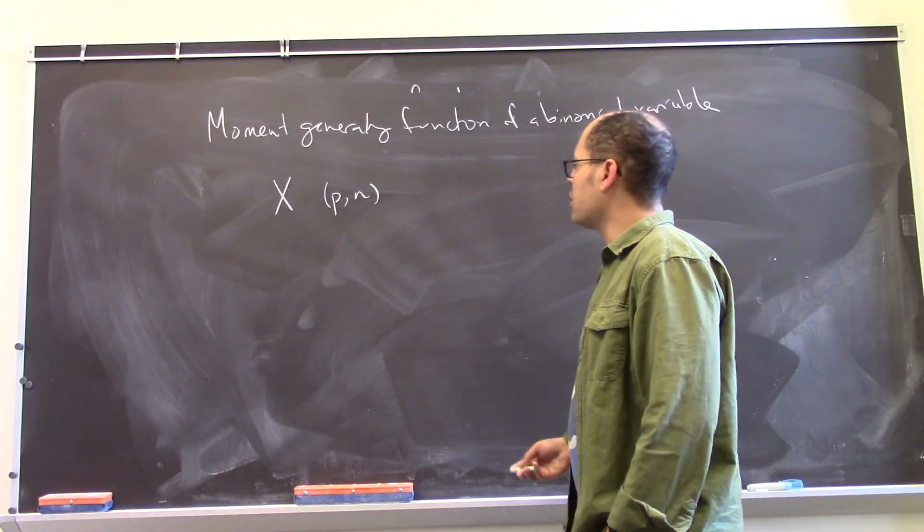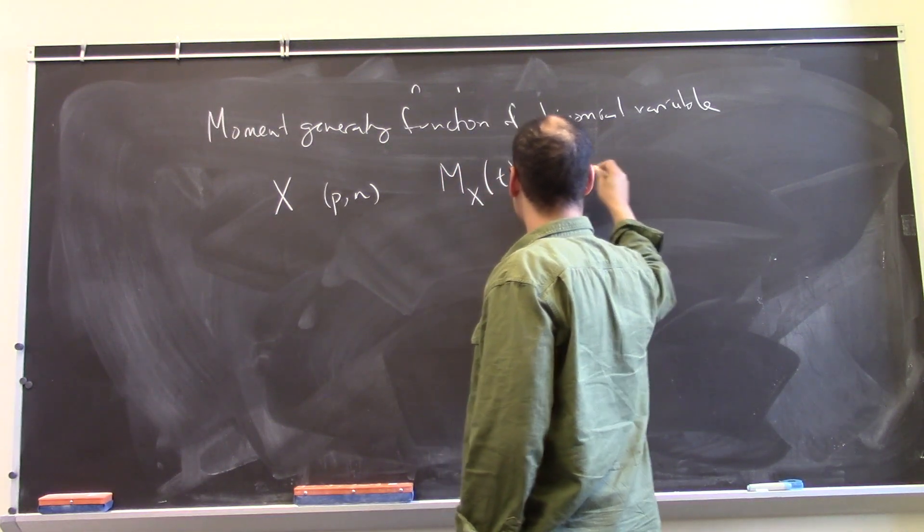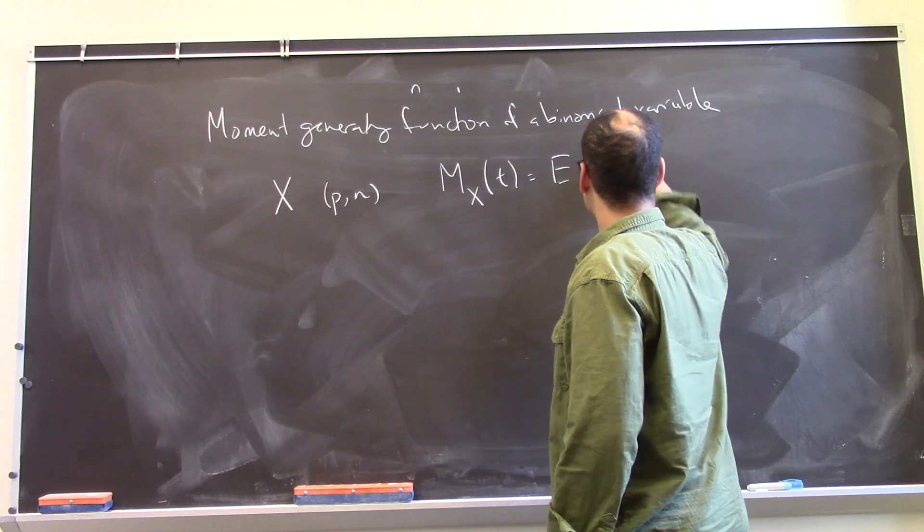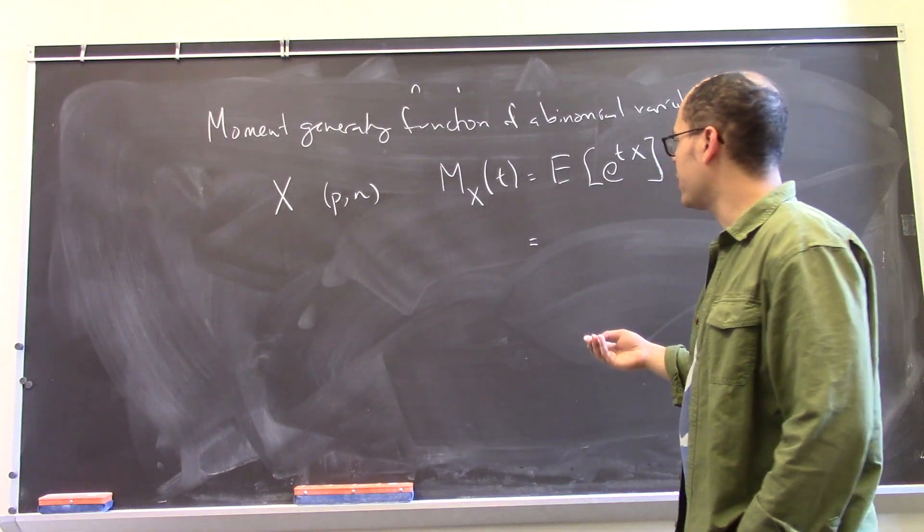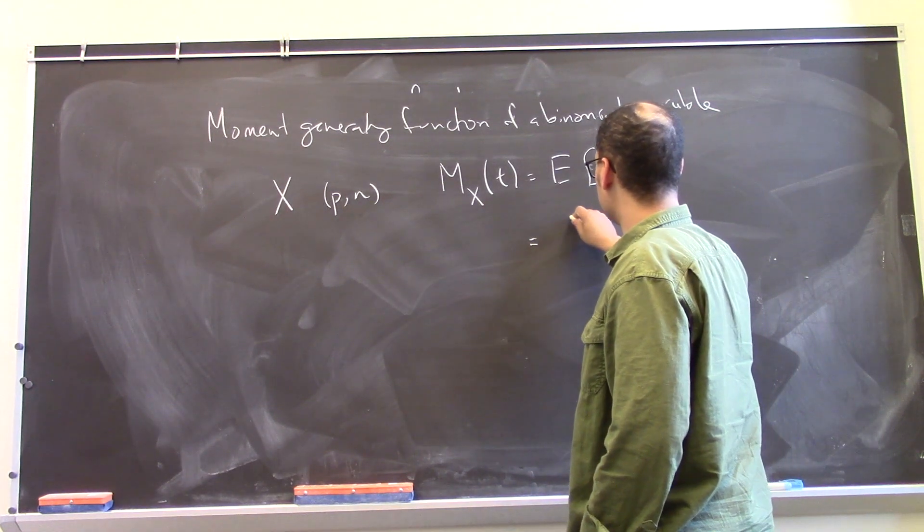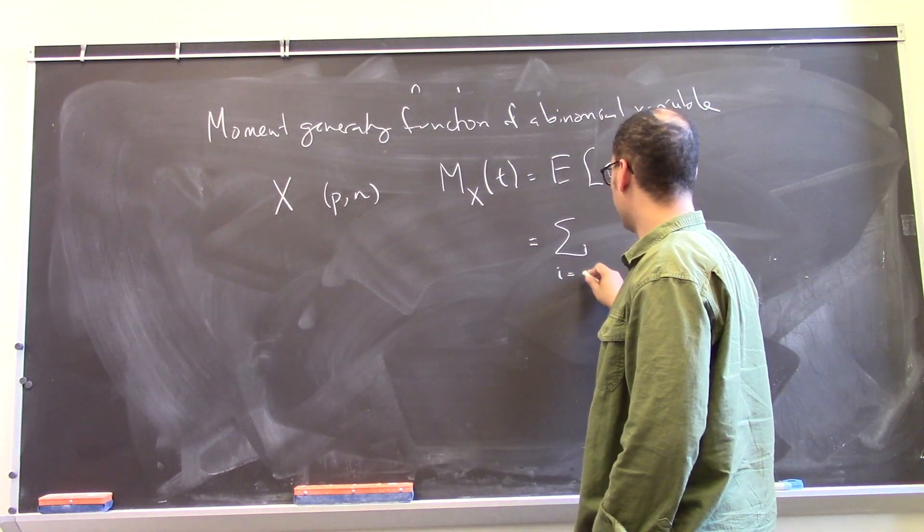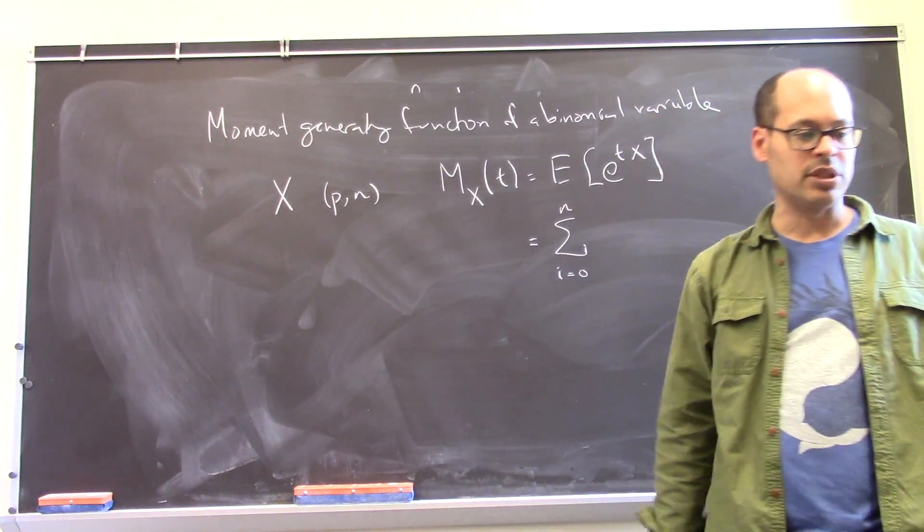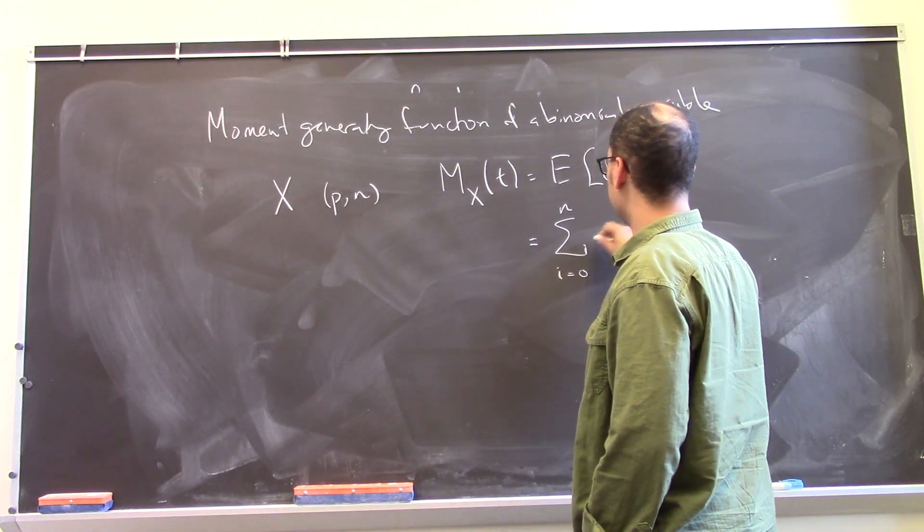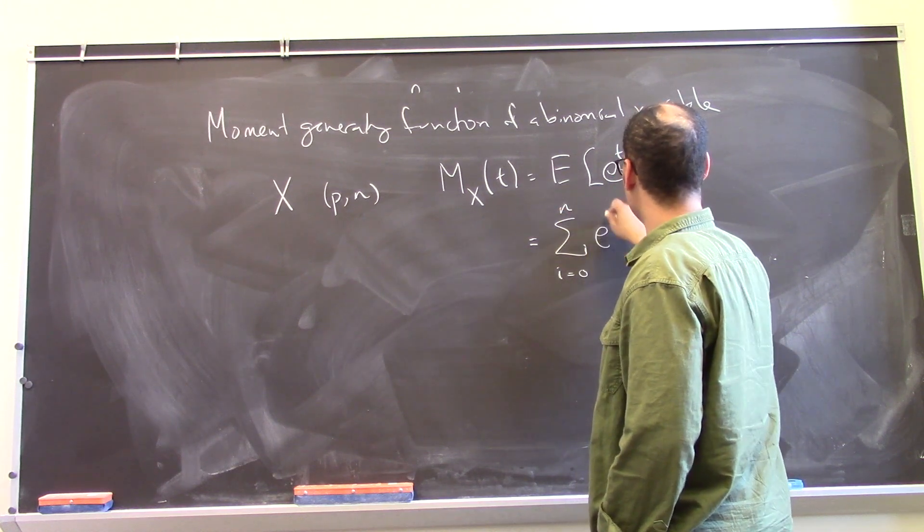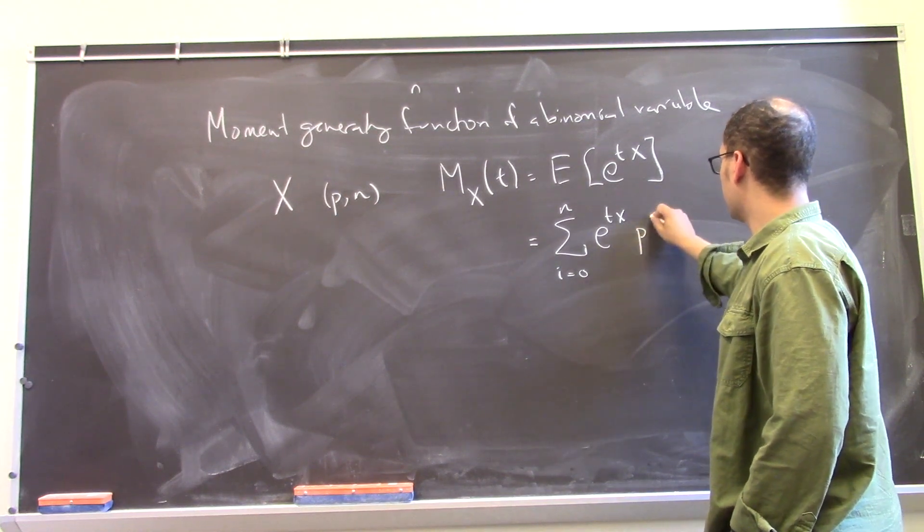And so let's compute the moment generating function for X. So this is the expected value of e to the tX. And of course in our case this is a discrete variable. So we can write this as the sum over all the possible values that X can take. That's really a sum from i going from 0 to n. We have somewhere between 0 and n successes. Of this expression e to the tX times the probability, times p of X.